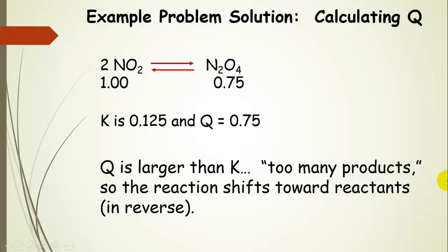So K is 0.125 and Q is 0.75. So Q is larger than the equilibrium constant value. And so thinking about products over reactants, this means that this system has too many products. It has more products than it would have at equilibrium.